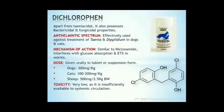Dichlorophen. Apart from taeniacidal properties, it also possesses bactericidal and fungicidal properties. It is effective against Taenia and Dipylidium infections in dogs and cats. It possesses very little activity in Moniezia expansa infections of sheep. It shows variable effects in Echinococcus treatment in dogs and Thysanosoma in sheep. Mechanism of action is similar to niclosamide — it interferes with the electron transport system and glucose absorption. Dose: 300 mg/kg to dogs; 100-200 mg/kg to cats; 500 mg per 2.5 kg to sheep. Toxicity is very low since it is insufficiently absorbed into the systemic circulation.